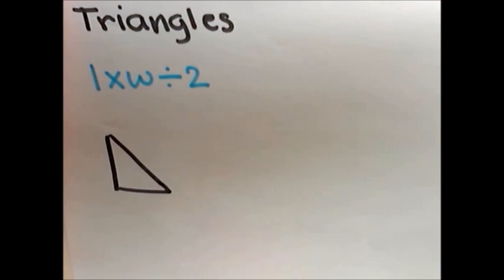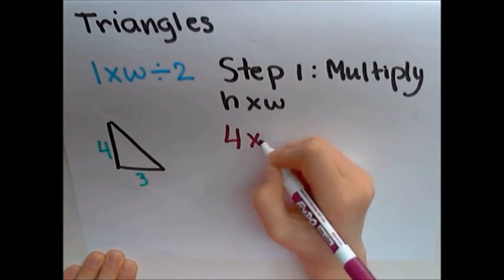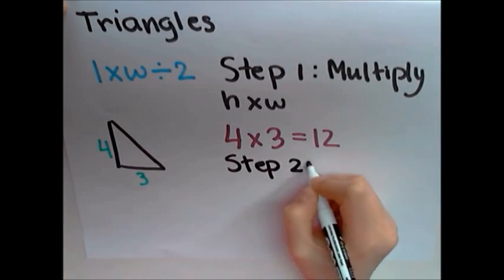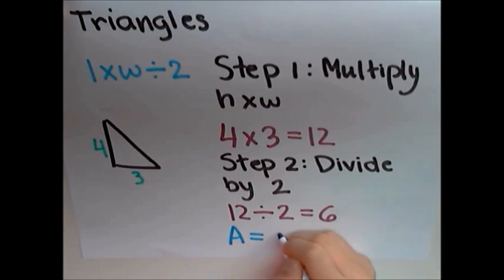For this example, I'm using a triangle with the width of 3 and a height of 4. Step 1: Multiply the width by height. In this example, multiply 3 by 4. Step 2: Divide that by 2. And the answer is 6 centimeters.